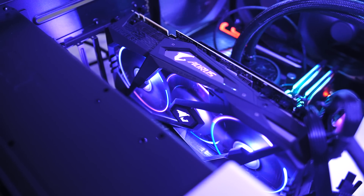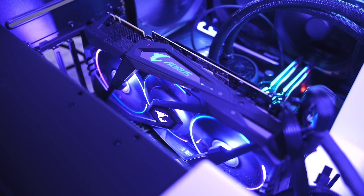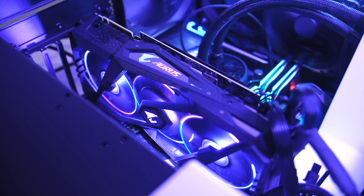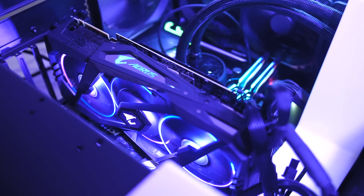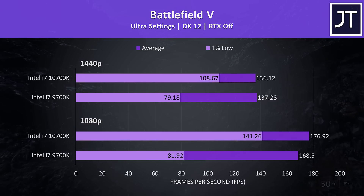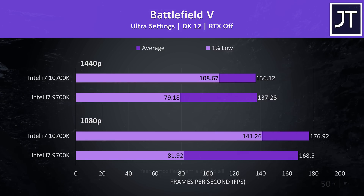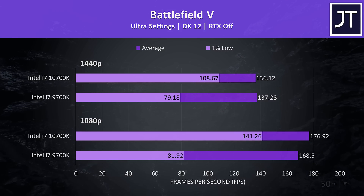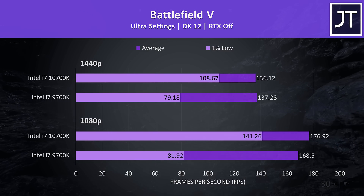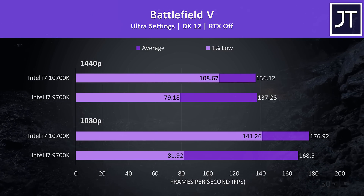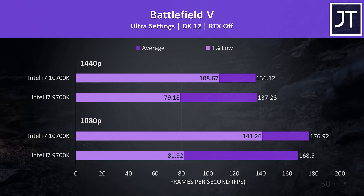Let's get into the gaming results next. I've tested 12 games at both 1080p and 1440p resolutions. We'll start with stock results, then look at overclocked, average differences, and cost per frame afterwards. Battlefield 5 was tested running through the same section of the game in campaign mode, with 1080p results at the bottom and 1440p results above. In this game there were huge gains with the 10700K in terms of 1% low performance, while differences to average FPS were far more minor comparatively.